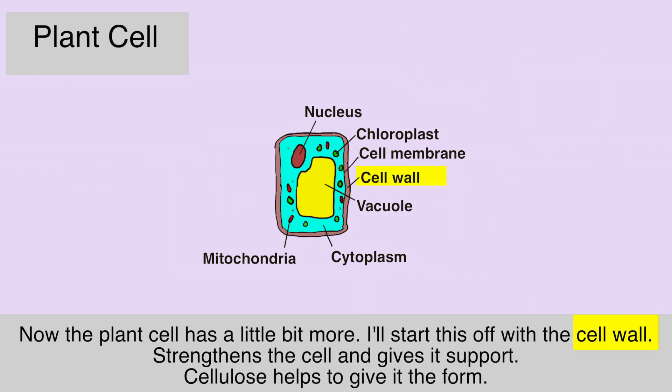The plant cell has a little bit more. I'll start with the cell wall — it strengthens the cell and gives it support. Cellulose helps to give it the form.